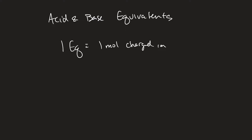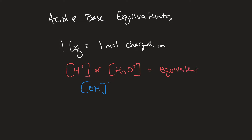With acid-base chemistry it's very similar, because oftentimes we don't necessarily care about what the acid or base is. What we specifically care about is the amount of hydrogen ions or hydronium — that's your acidic portion — or the amount of hydroxide ions. So we can look at the equivalent of an acid or an equivalent of a base.